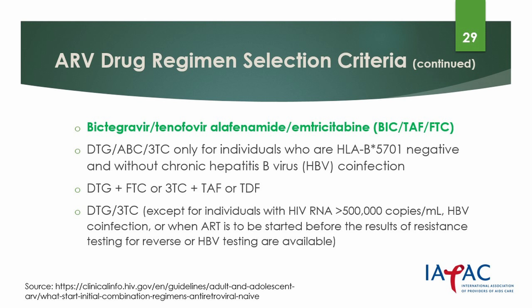DHHS guidelines further classify the following as recommended regimens for people living with HIV. The first is the combination of bictegravir, TAF, and emtricitabine. The second is dolutegravir plus abacavir and lamivudine, available only for patients who are HLA-B*5701 negative and who do not have hepatitis B. Third, dolutegravir plus either emtricitabine or lamivudine plus tenofovir alafenamide (TAF). And finally, dolutegravir plus lamivudine — a two-drug regimen not suitable for people with a viral load more than 500,000 copies, those with hepatitis B infection, or when ART is to be started before the results of genotypic testing and HBV testing are available.